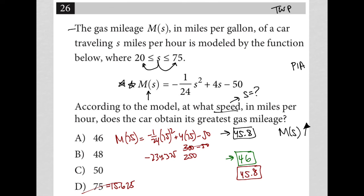So the highest value was actually at S equals 48, which gave us M of S equals 46. That's slightly higher than the 45.8 I got from choices A and C. So that was actually a pretty surprising answer — choice B is the best answer.